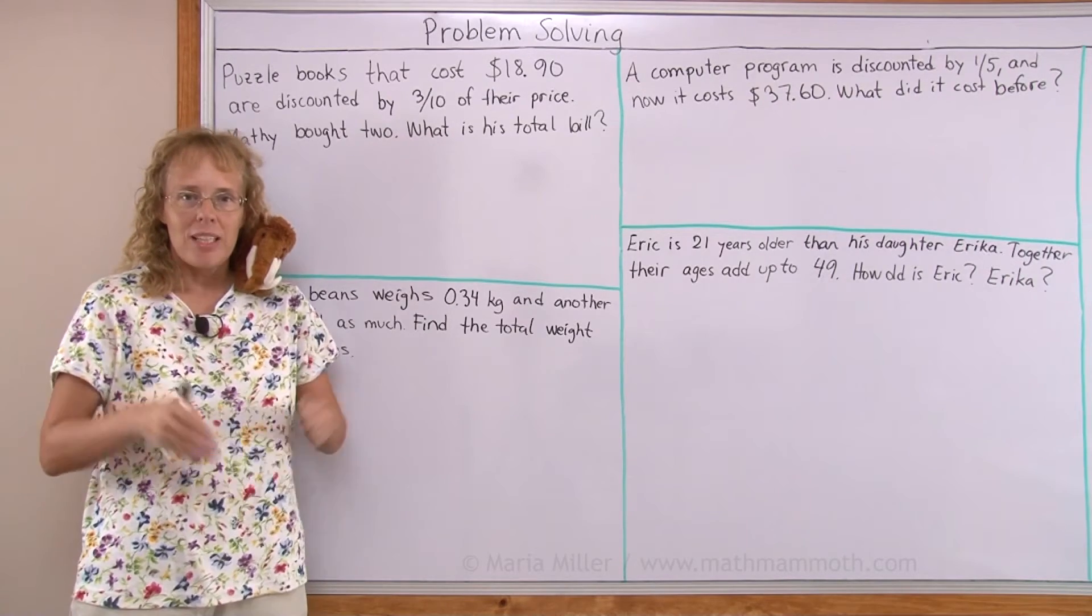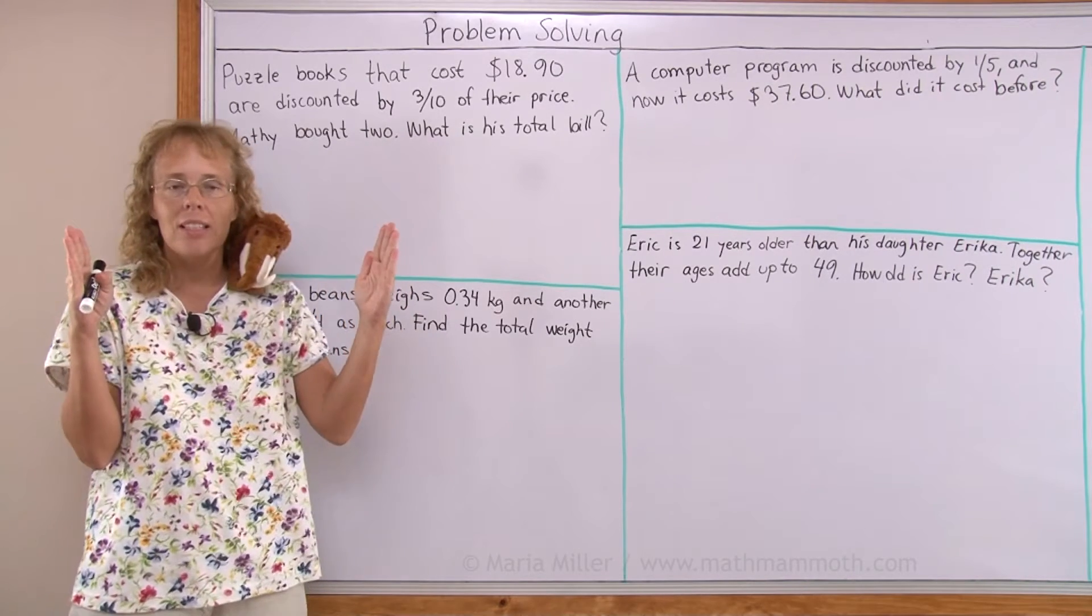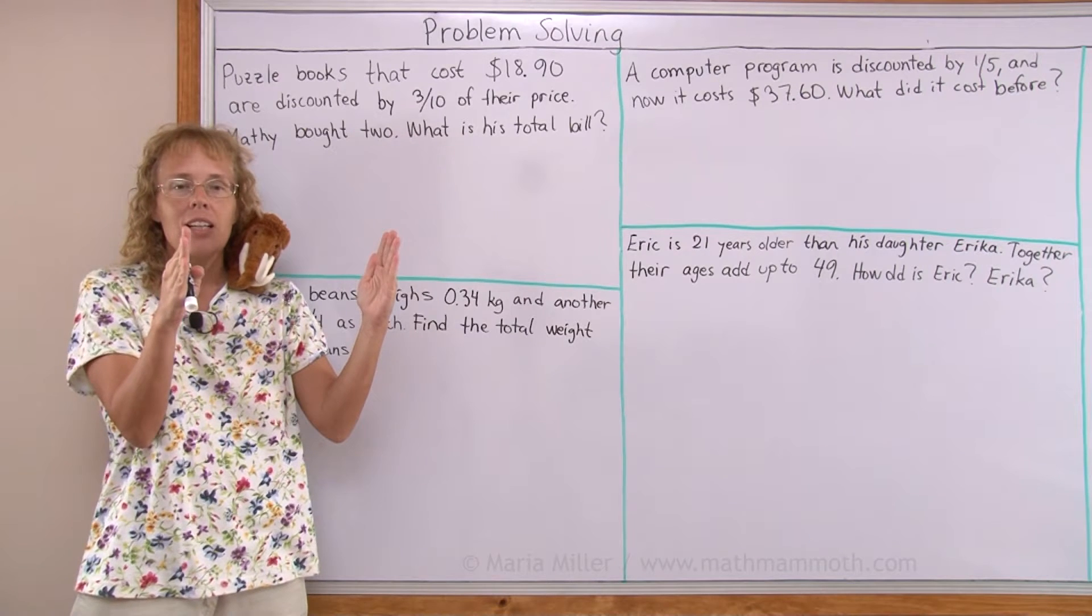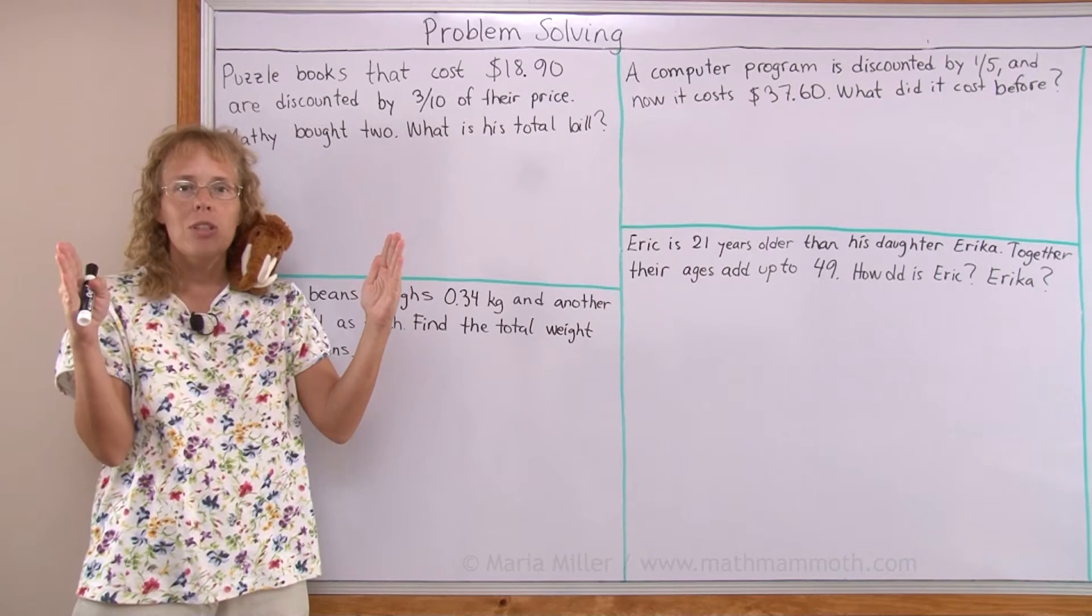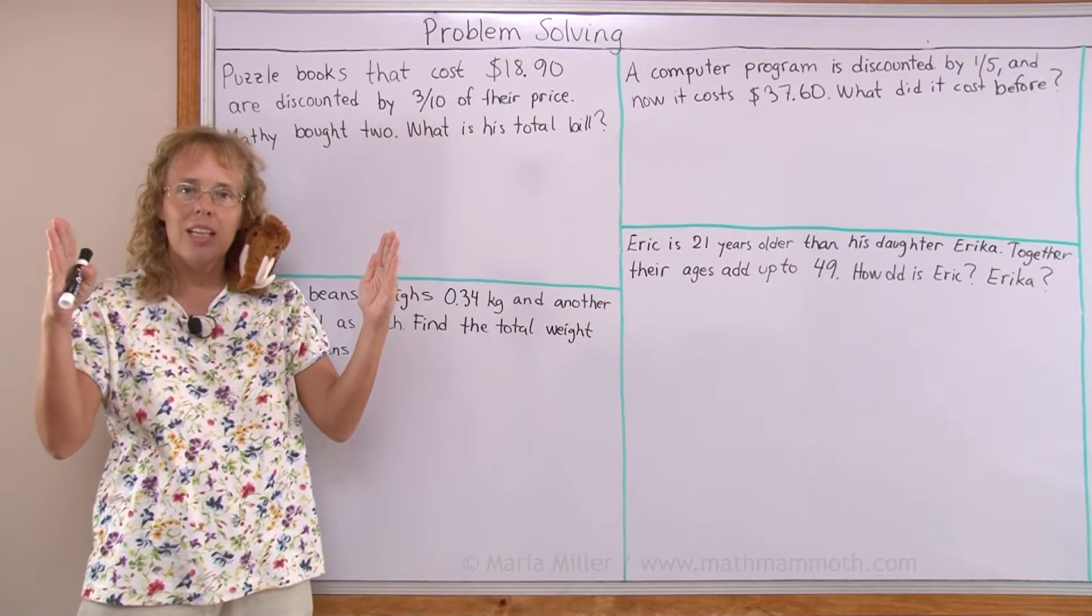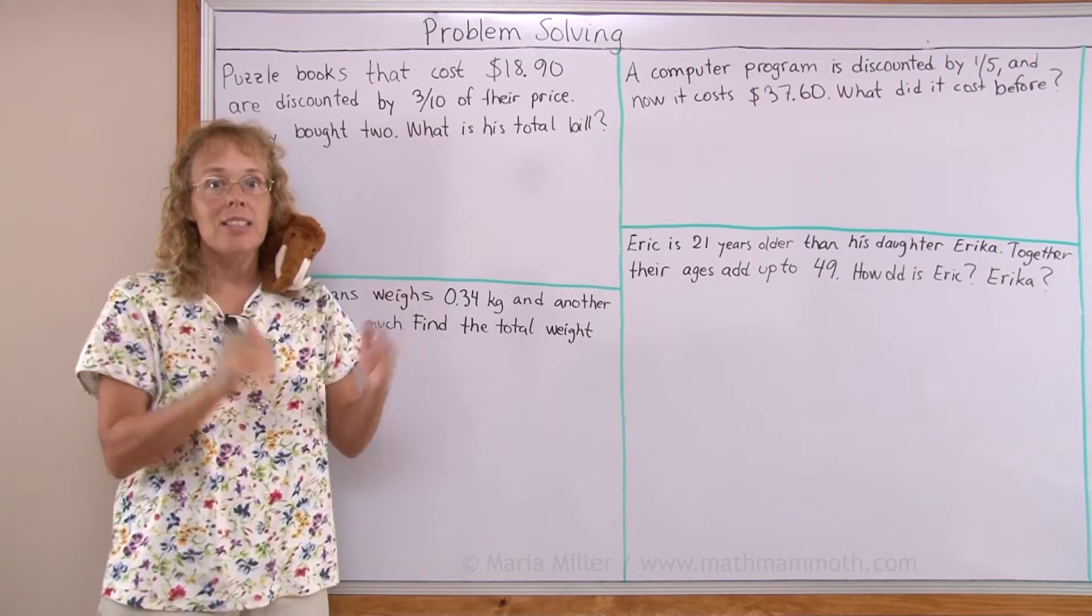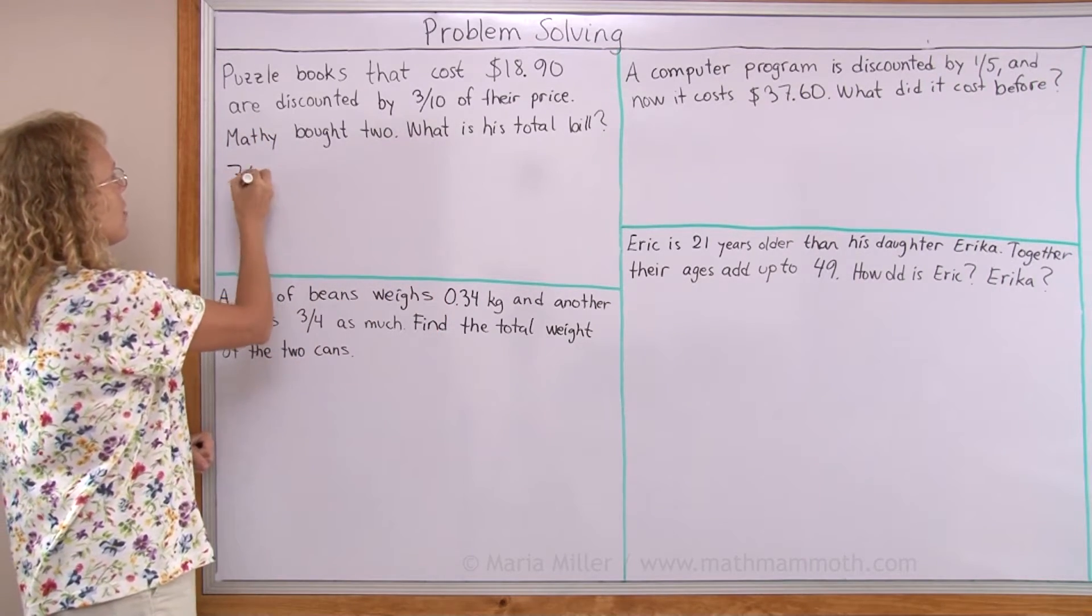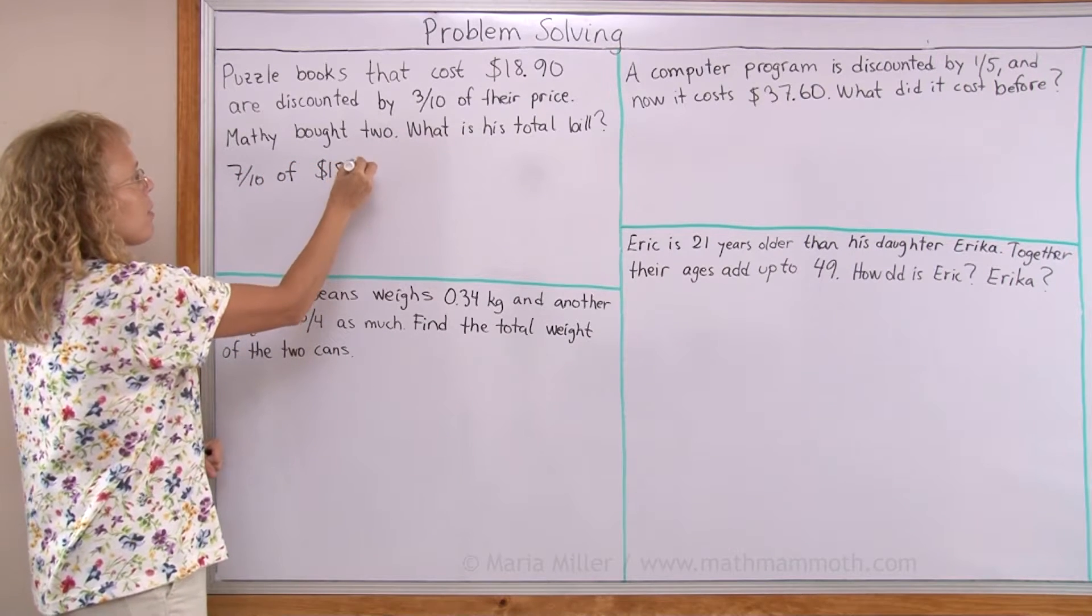Think of the total price as being here, this much. This is the total price, the original price, and now we take off three-tenths of the price. So what part of the price is left? What fraction of the price is left if we take away three-tenths of it? Well, seven-tenths of the price is left. So what we need to find is seven-tenths of $18.90, right?